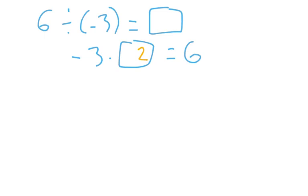But negative 3 times positive 2 gives me negative 6. Multiply two numbers with opposite signs, you get a negative number. If I want to get a positive number, these signs will have to be the same. This will have to be a negative 2.